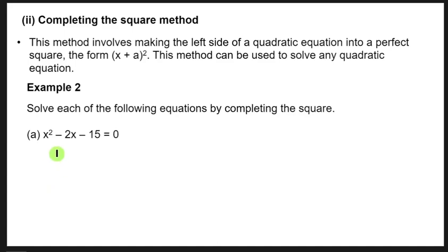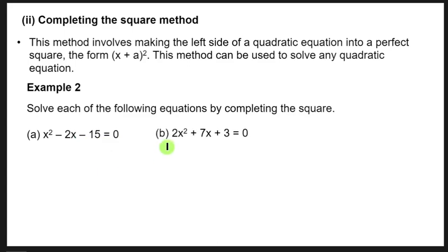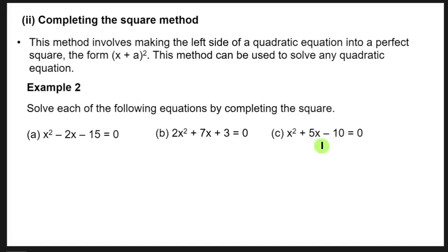Solve each of the following equations by completing the square. We have: A) x² - 2x - 15 = 0, B) 2x² + 7x + 3 = 0, and C) x² + 5x - 10 = 0.